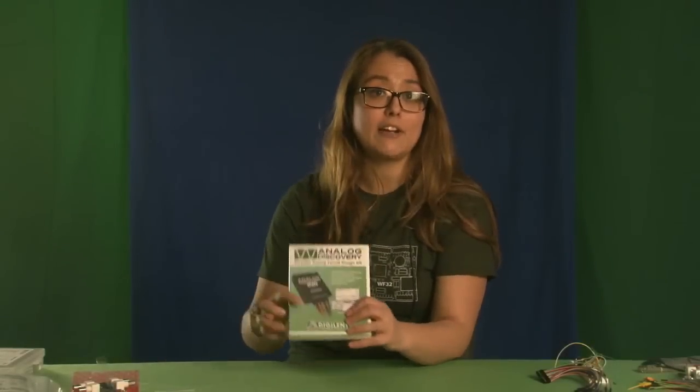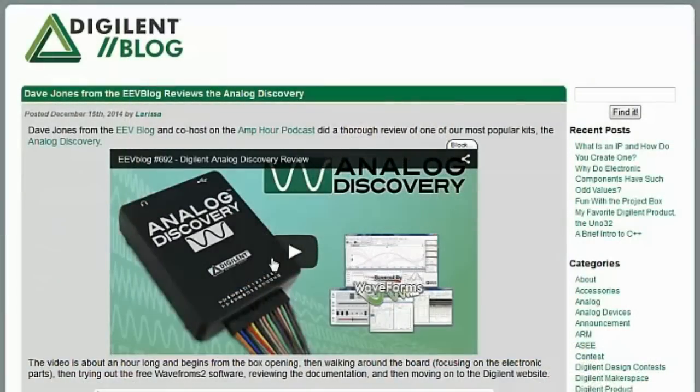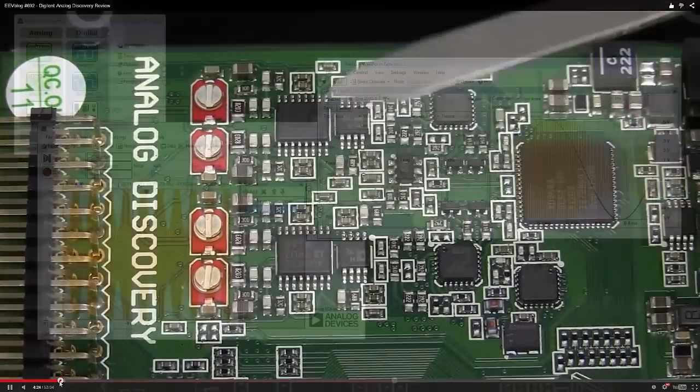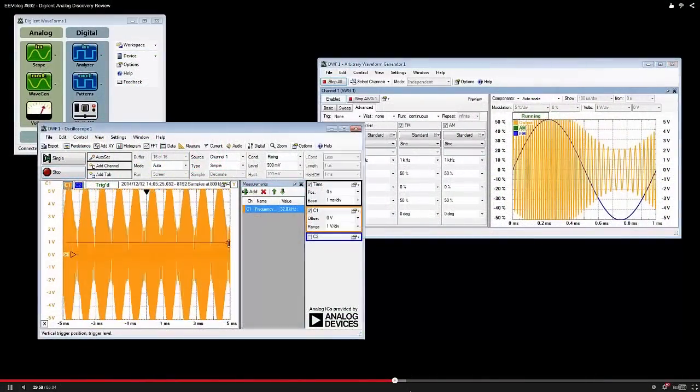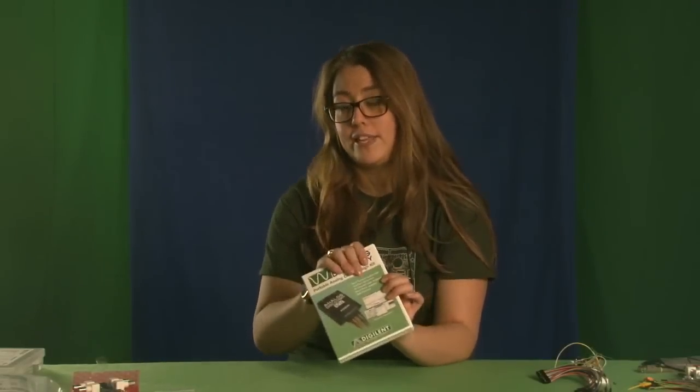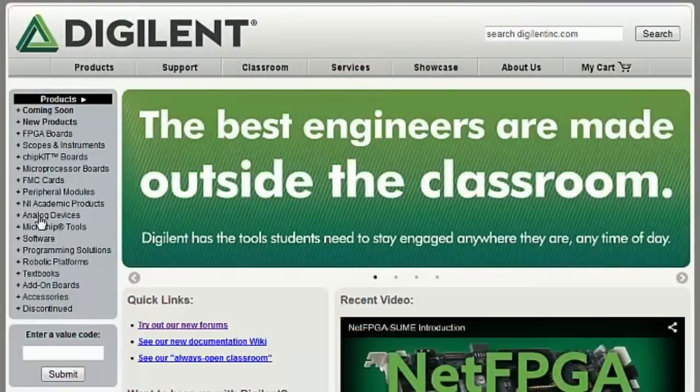Alternatively, if you want to learn more about the analog discovery and the current release of the software, there's a brilliant teardown that was made by Dave Jones from the EEV blog, and we'll provide the links below. What I wanted to really focus on though, was the things you can bundle with your analog discovery to get more out of your tool. If you're getting this tool to help you better learn analog electronics or looking to strengthen your fundamentals, then you should look at the analog parts kit.